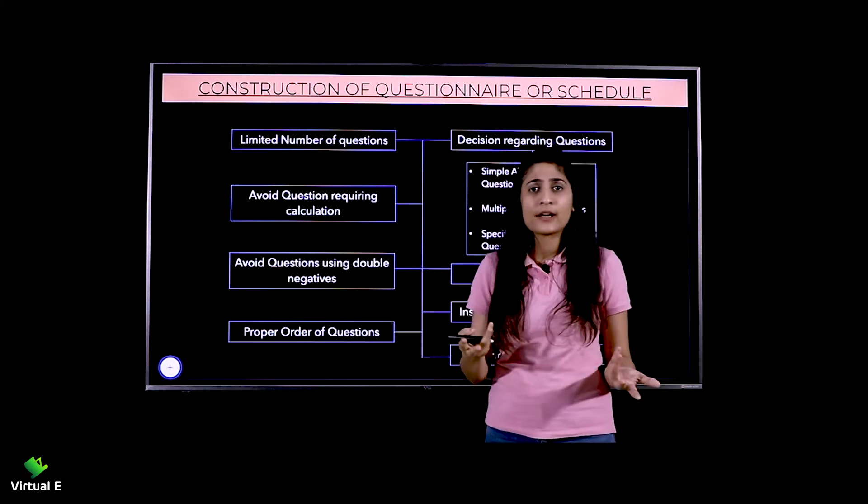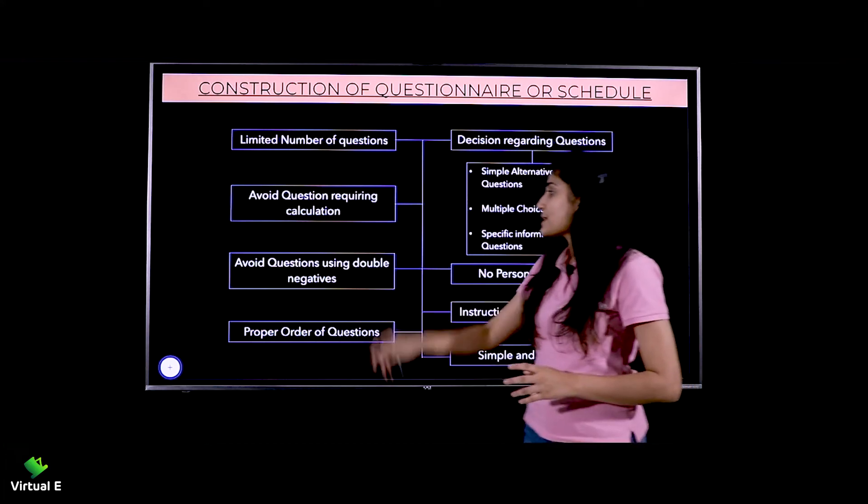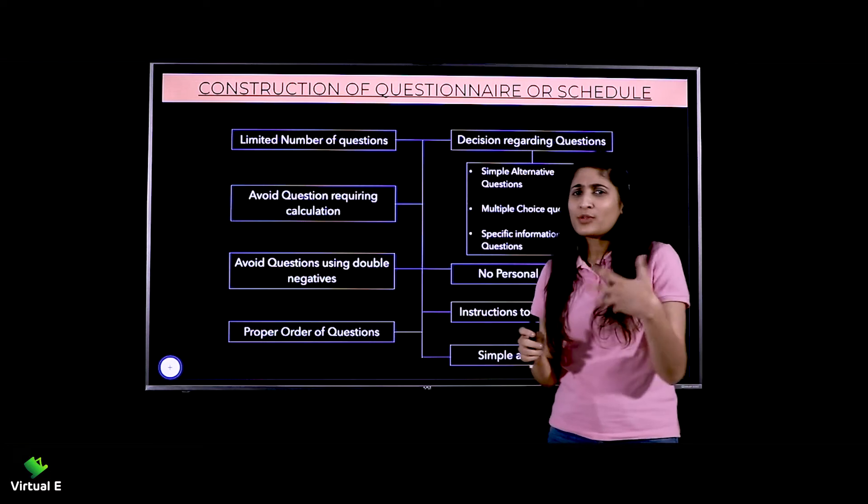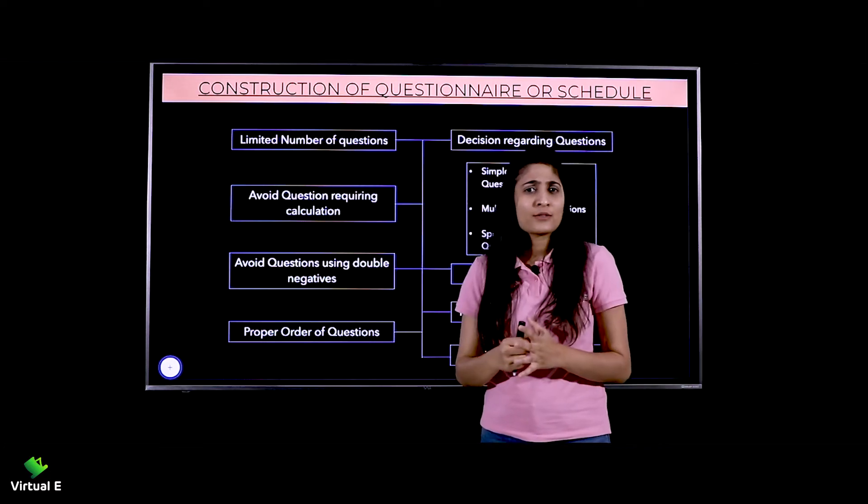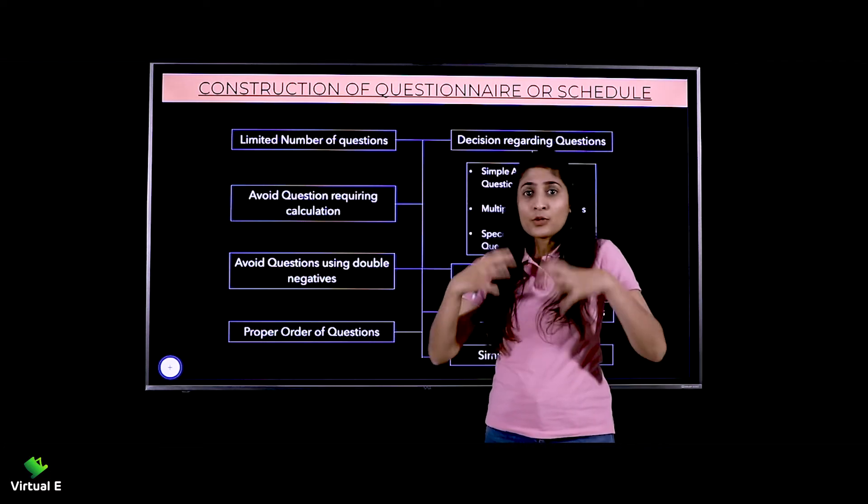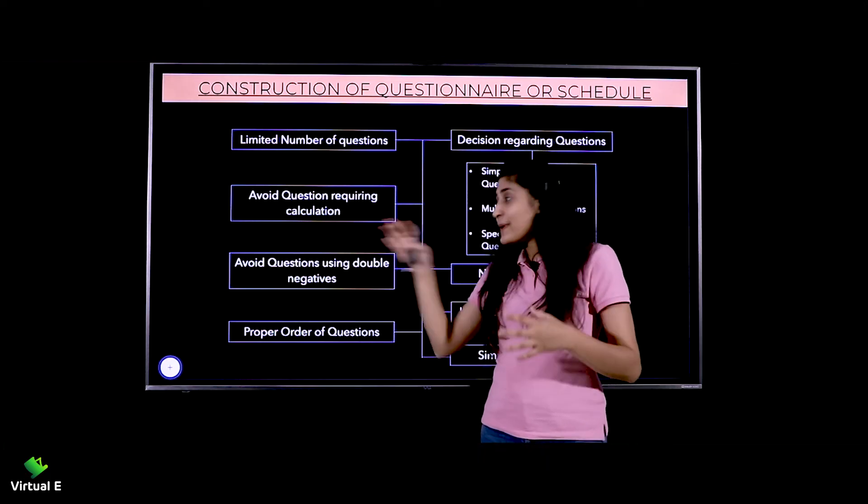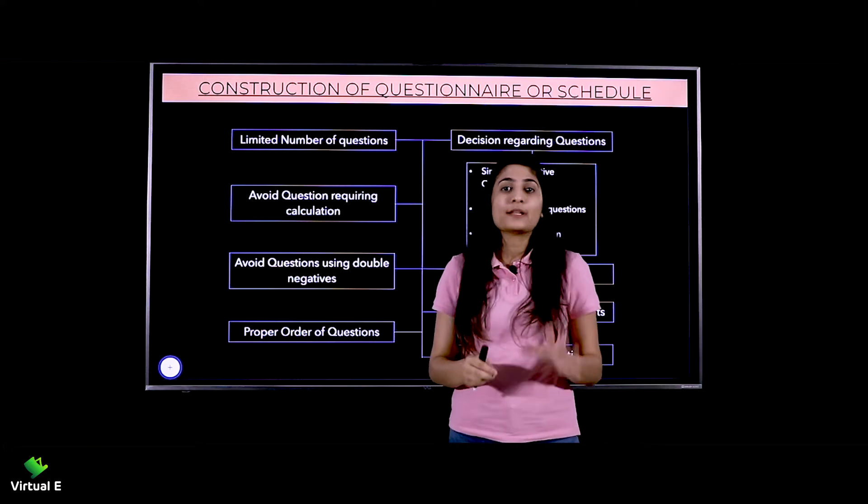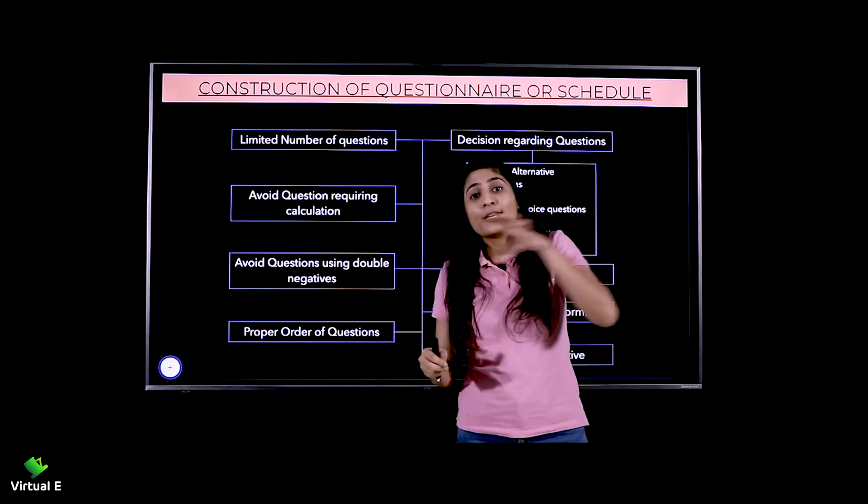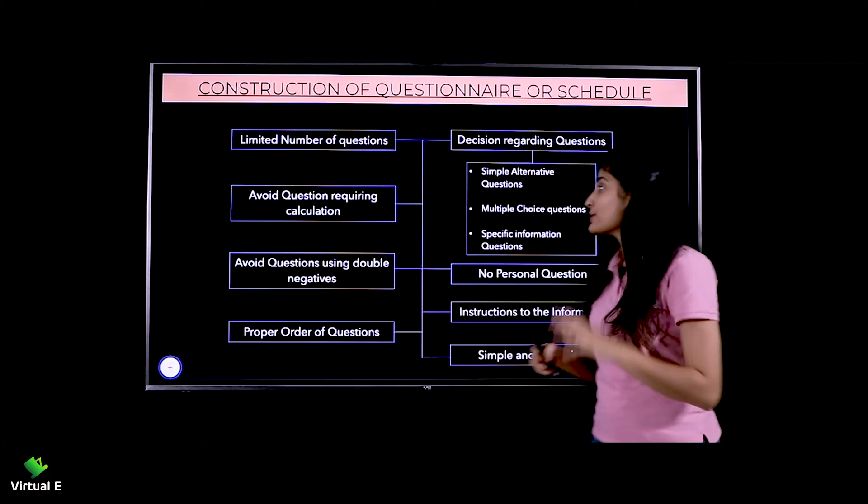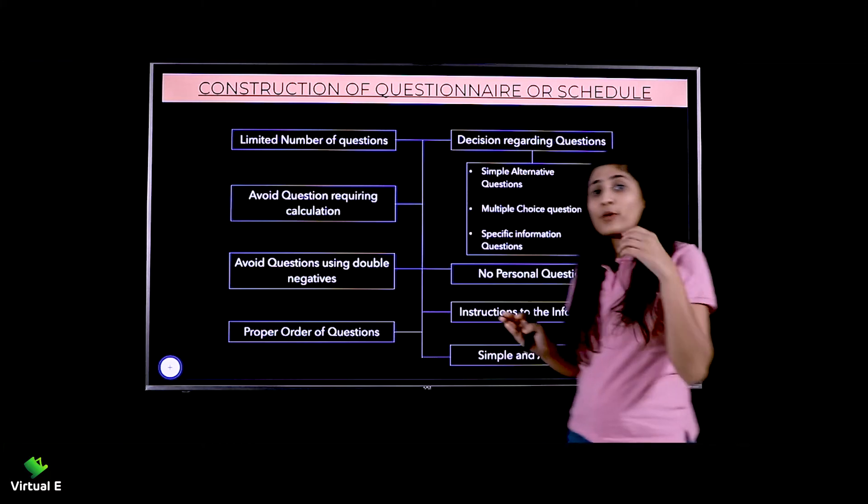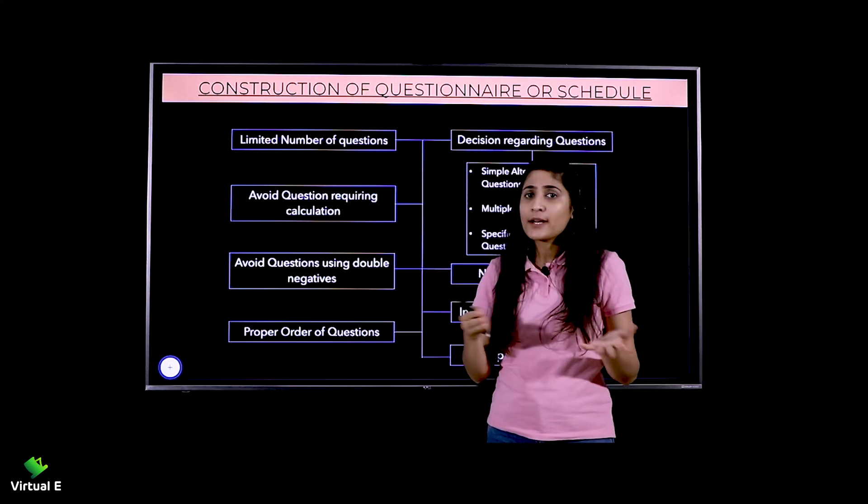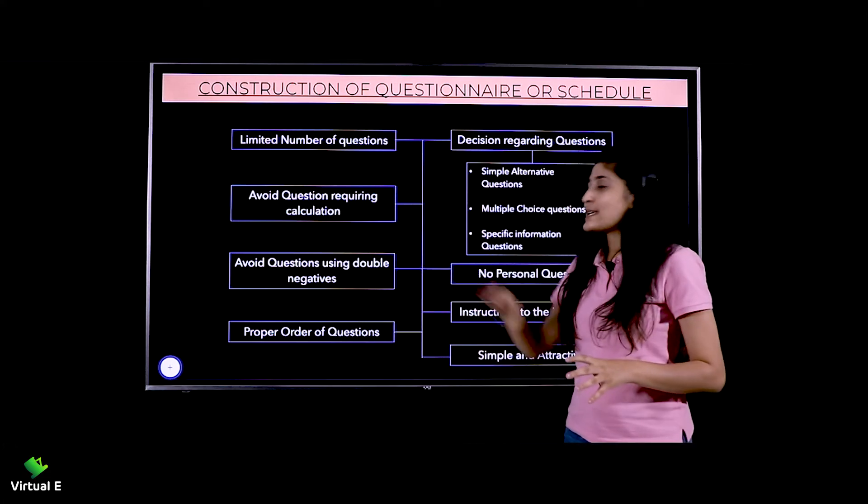Avoid questions using double negatives. Don't ask 'Don't you think we should do something to keep the city clean?' Don't use double negatives. Instead, you can ask 'How can you keep the city clean?' and provide four options. Give whatever four options seem preferable for your questionnaire. This makes it much easier to answer.